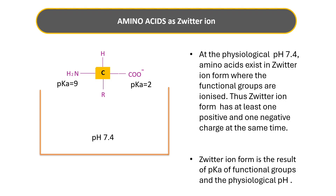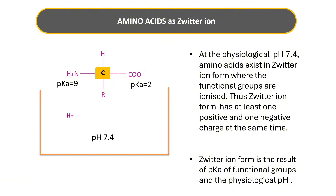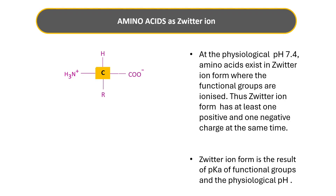Coming to the amino group — its pKa is 9. When placed in pH 7.4, it senses the surrounding pH as acidic. To neutralize the acidic pH, it accepts H+ ions from the surrounding and becomes NH3+. That is the reason for the zwitterion form of amino acids. In the zwitterion form, the carboxyl group is negatively charged and the amino group is positively charged at physiological pH, and the reason is the pKa of functional groups and the physiological pH.